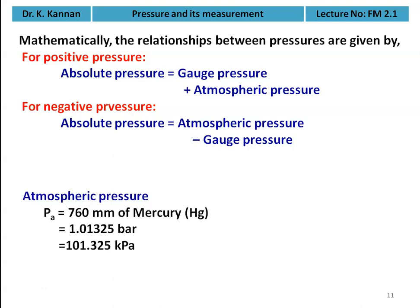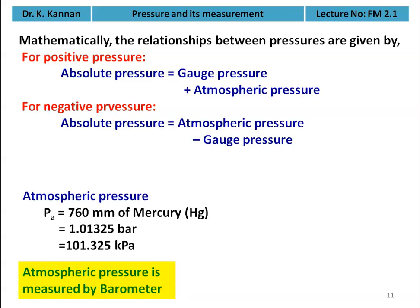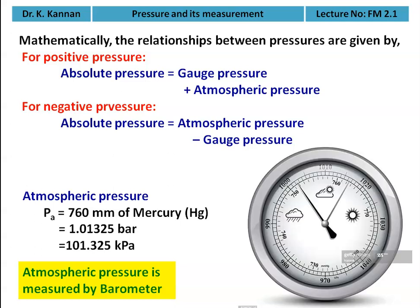Atmospheric pressure is 760 mm of mercury, or 1.01325 bar, or 1.01325 kilopascal. It is measured by an instrument called a barometer. The dial indicates millimeters of mercury on the inner scale and hectopascal (HPA) on the outer scale. The standard atmospheric pressure at sea level is 760 mm of mercury — this constant is used across all subjects.